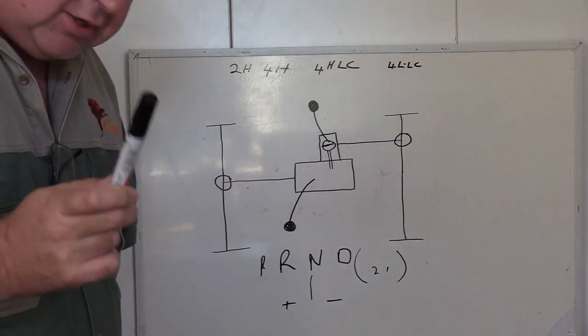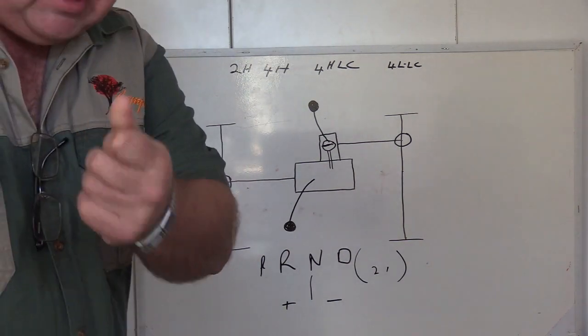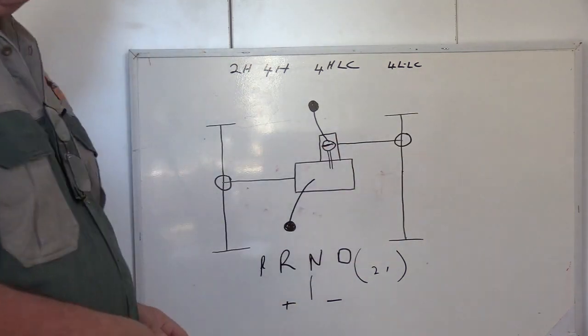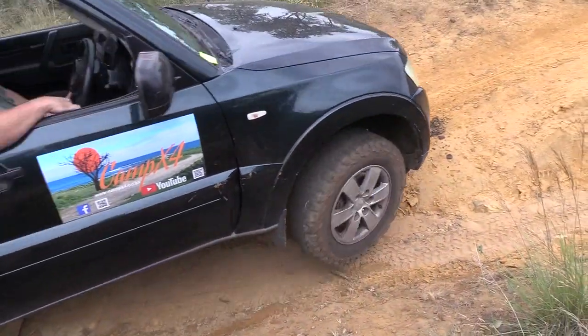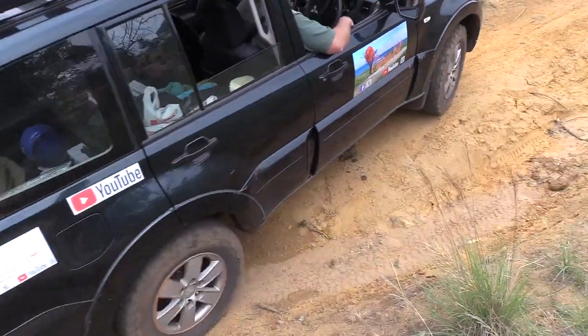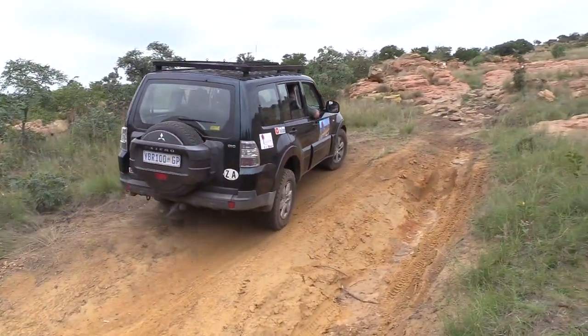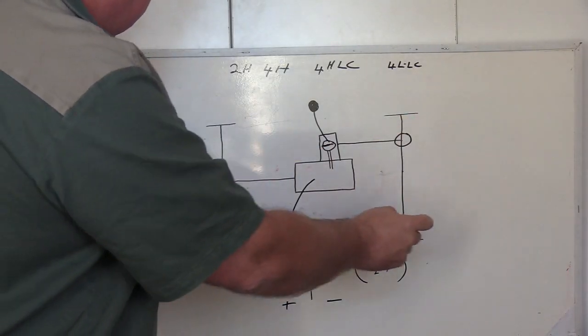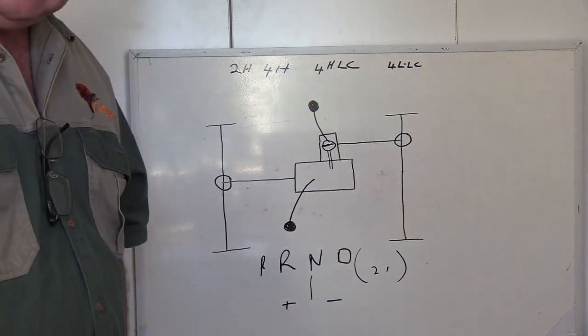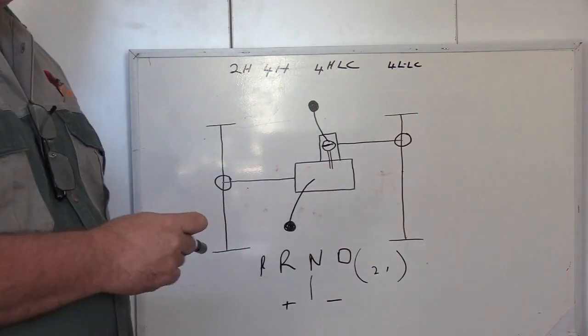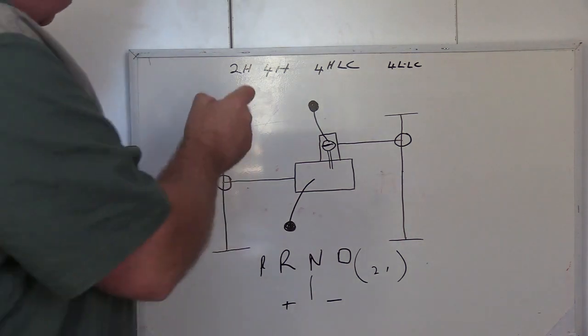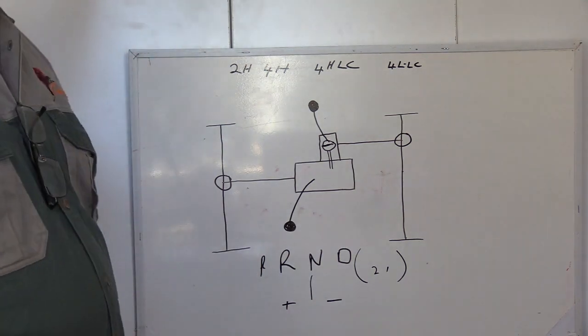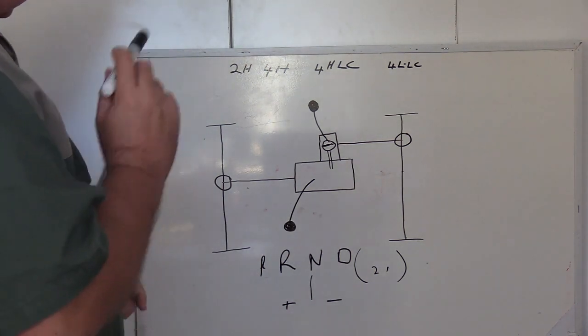But it costs money, so what did Mitsubishi do? They put in some clever electronics that catches the wheel that spins and applies the brake. So in other words, instead of putting diff locks here and here, they have got electronics that monitors the wheel and compares it with all the other wheels, which senses when one wheel is spinning, brakes that wheel, and automatically transfers the power to the other wheel.